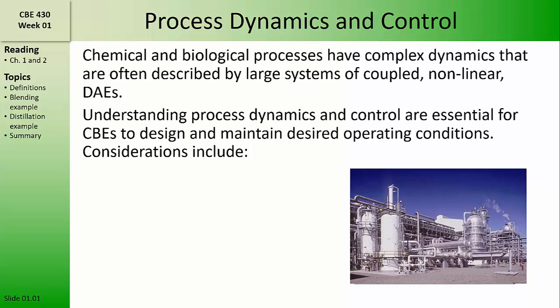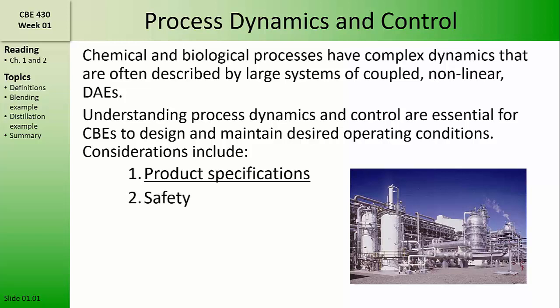In order to select those desired operating conditions and the control schemes that we will use, we'll consider product specifications. Sometimes we want to design control systems so that a product stream has the correct composition, or so that a waste stream doesn't violate some environmental regulation. We also need to consider process safety. The basic process control system is integrated with other systems that are in place to ensure process safety. Process control can be used to improve the efficiency of processes as well. By maintaining processes near their steady state design conditions, we can avoid inefficiencies like waste energy and other utility streams.